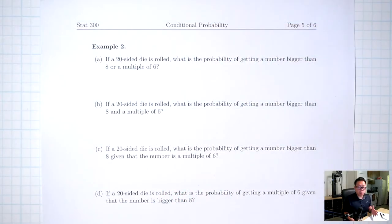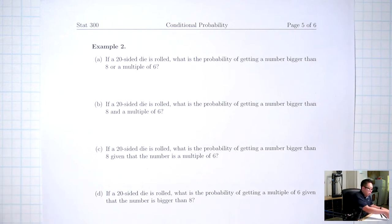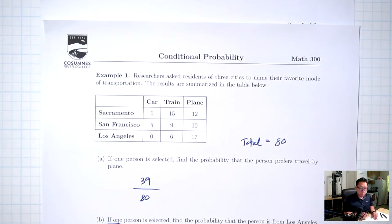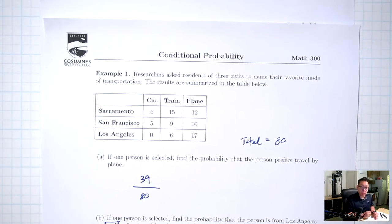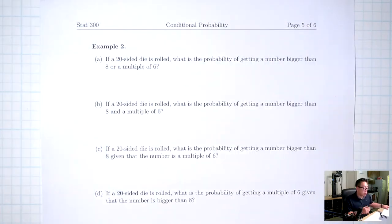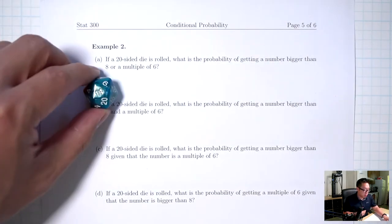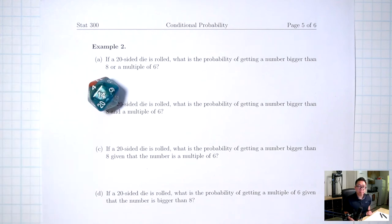Alright, so we just got done talking about conditional probability, multiplication rule, and at least one problems in the context of a table and picking people. So now let's talk about those three same concepts with rolling a die.